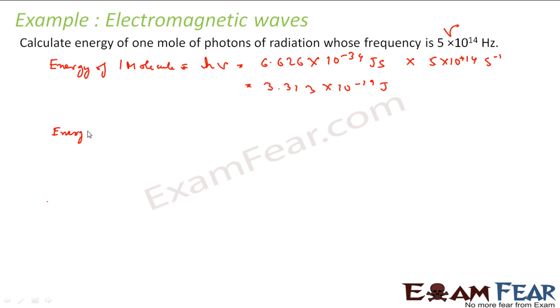So this is my energy of one molecule. I want to find energy of one mole. So energy of one mole is nothing but one mole has 6.023 × 10^23 molecules. So this into energy of one molecule. Energy of one mole is this number, because one mole has many molecules, into energy of one molecule.